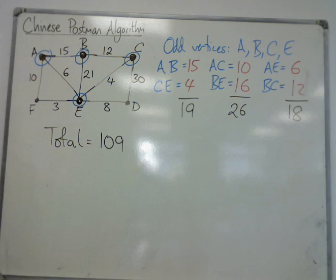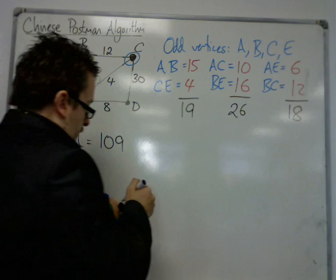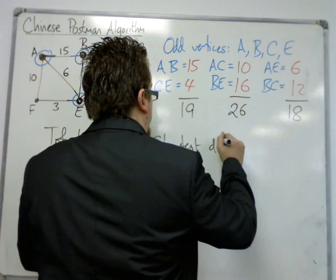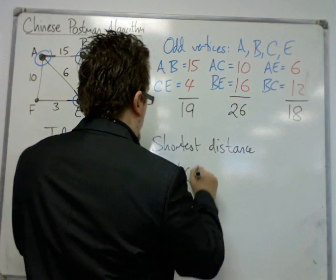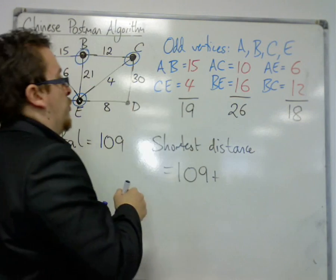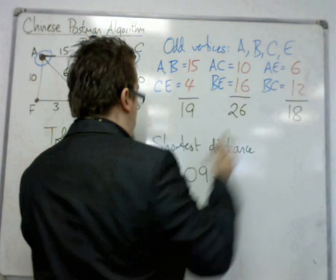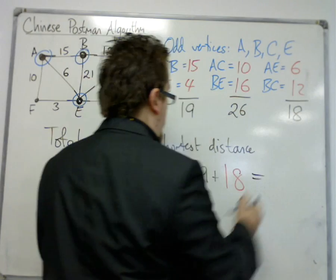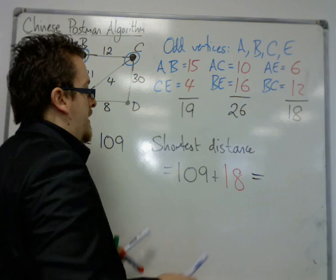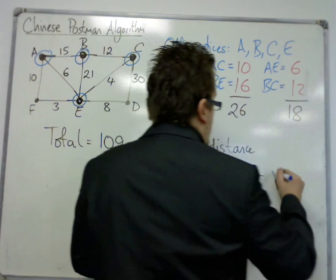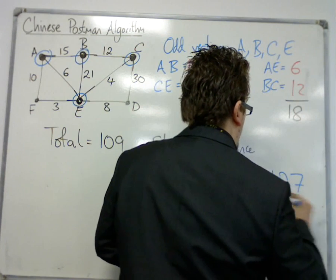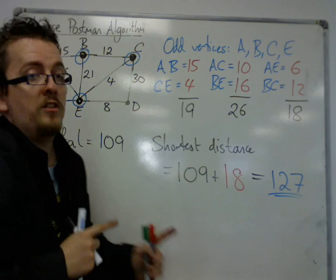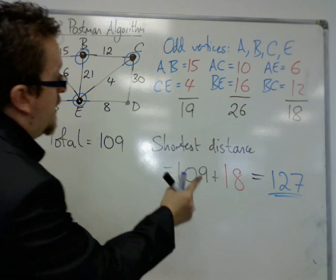So, the actual shortest distance is the 109 plus the shortest of these three pairings, which is the 18. So, the shortest possible route for the Chinese postman, in this case, is 127.